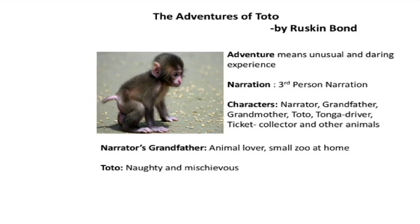In a story there are characters. When I say characters, we don't just mean human beings — even animals become characters. In this story we have the narrator, grandfather, grandmother, Toto (the main protagonist — the hero), the Tonga driver, and a ticket collector. There are also many animals in the zoo.